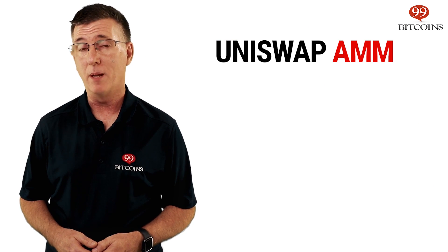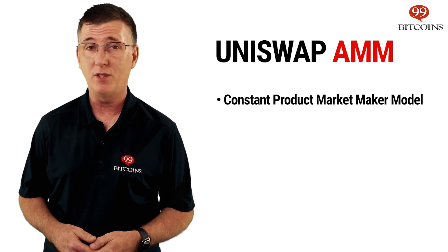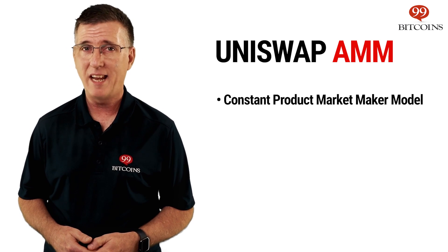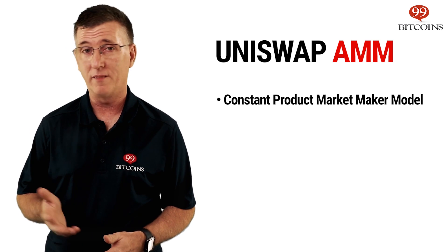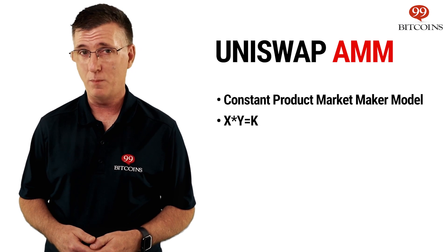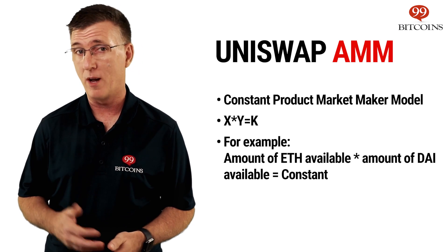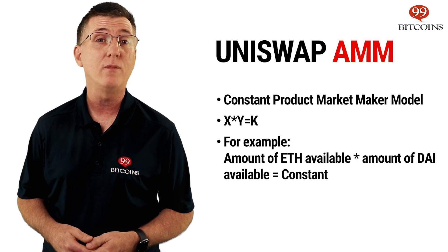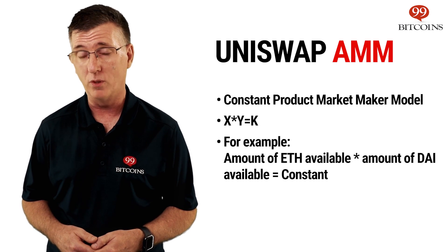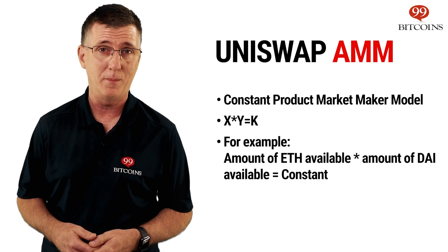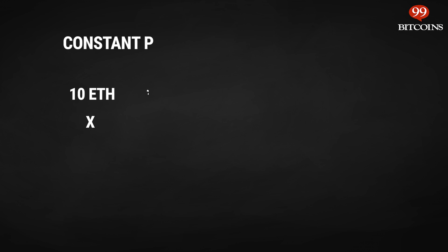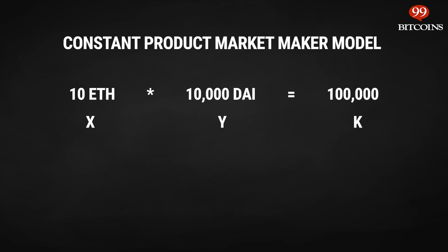Uniswap uses an AMM called the Constant Product Market Maker Model to determine the price of coins on its exchange. This AMM follows a simple formula of X times Y equals K. This means that when trading, for example, Ether for DAI, the amount of Ether available times the amount of DAI available on Uniswap's Ether-DAI liquidity pool should always equal a constant number. Imagine there are 10 Ether and 10,000 DAI on a certain liquidity pool. Using the AMM model, the number of Ether times the number of DAI equals 100,000 — this is our constant, K.